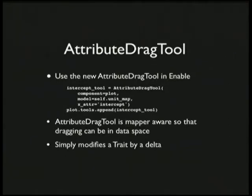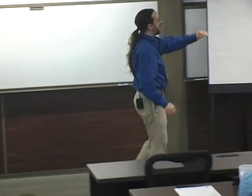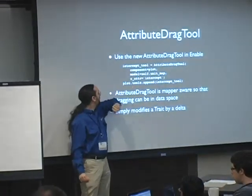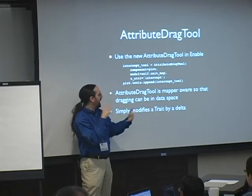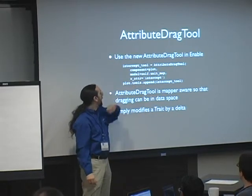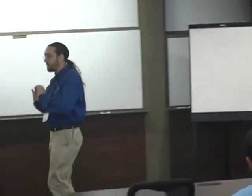We've been folding some of these tools into the code base. The one I've been working on recently is an attribute drag tool — and it's really, really dumb. We use Traits at our lowest level; a trait is a fancy property or attribute on a class. All an attribute drag tool does is when the user drags on the screen, it changes the trait. That's all it does. We're setting up an attribute drag tool on our plot, modifying our unit map — which maps data from its original to the adjusted image — and we're adjusting the intercept attribute.